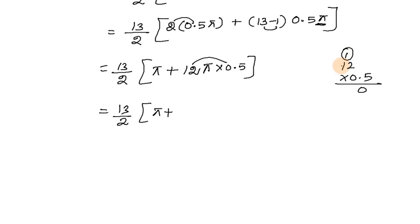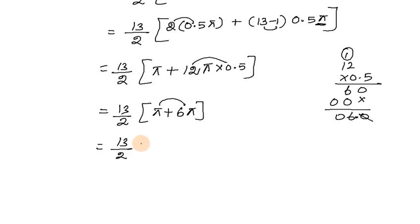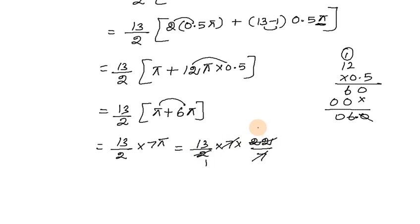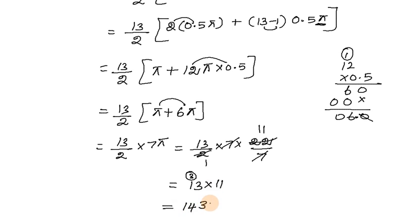Calculating: 13/2 × 2 into π plus 12 × 0.5. Two 5s are 10, carry 1. One 5 is 5, plus 1 is 6. So we get 6π. Adding 1π gives 7π. Therefore the expression becomes 13/2 × 7 × 22/7. The 7s cancel. Then 13/2 × 22 = 13 × 11 = 143.